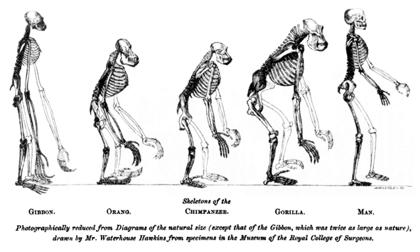Biological ontologies are directed acyclic graphs of controlled vocabularies. They are designed to capture biological concepts and descriptions in a way that can be easily categorized and analyzed with computers. When categorized in this way, it is possible to gain added value from holistic and integrated analysis. The OBO Foundry was an effort to standardize certain ontologies. One of the most widespread is the gene ontology which describes gene function. There are also ontologies which describe phenotypes.